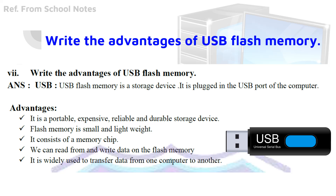USB flash memory is a storage device. A storage device is used to store data. As you can see in the picture here, it is plugged into the USB port of the computer. There is a USB port in the computer, and the USB is inserted into it. It is used to read, write, or remove data.